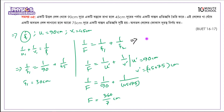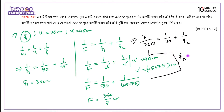So 7 over 360 equals 1 over 30 plus 1 over f2. Solving for f2, the calculation gives f2 equals minus 72 centimeters. So the second lens has a focal length of minus 72 centimeters — it's a diverging lens.